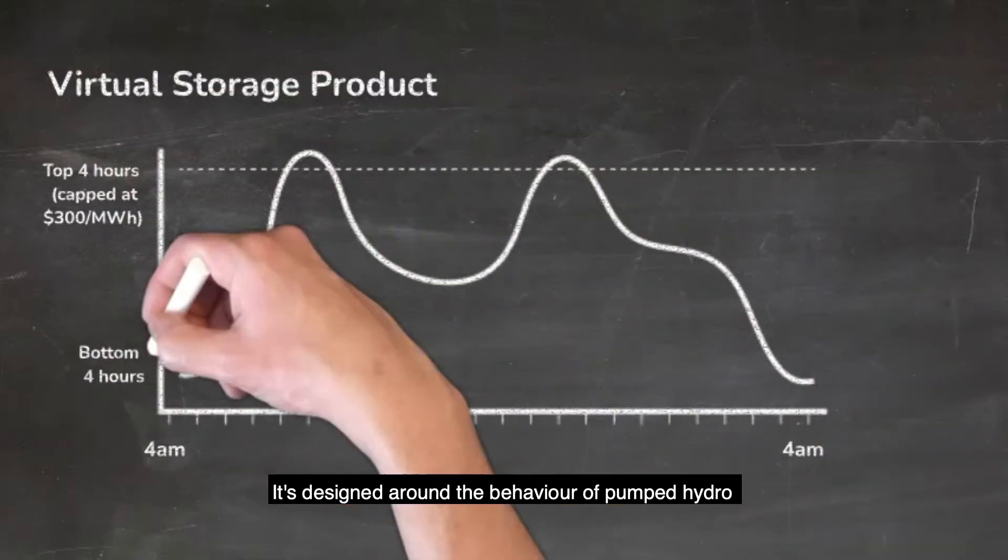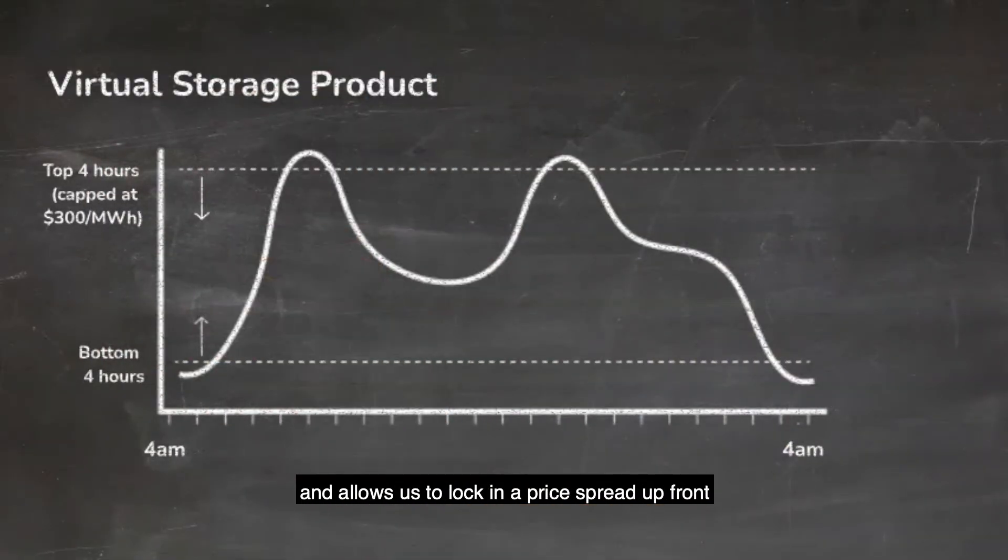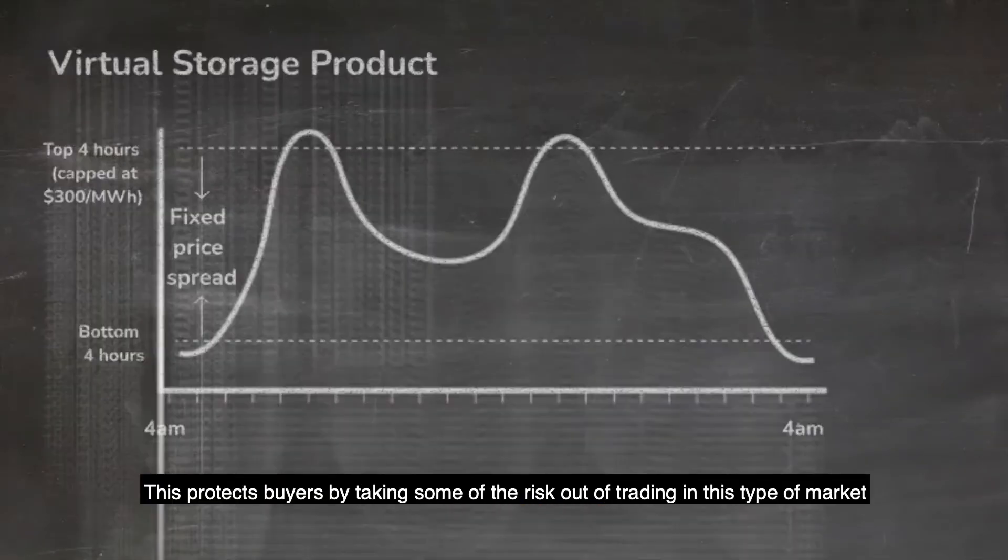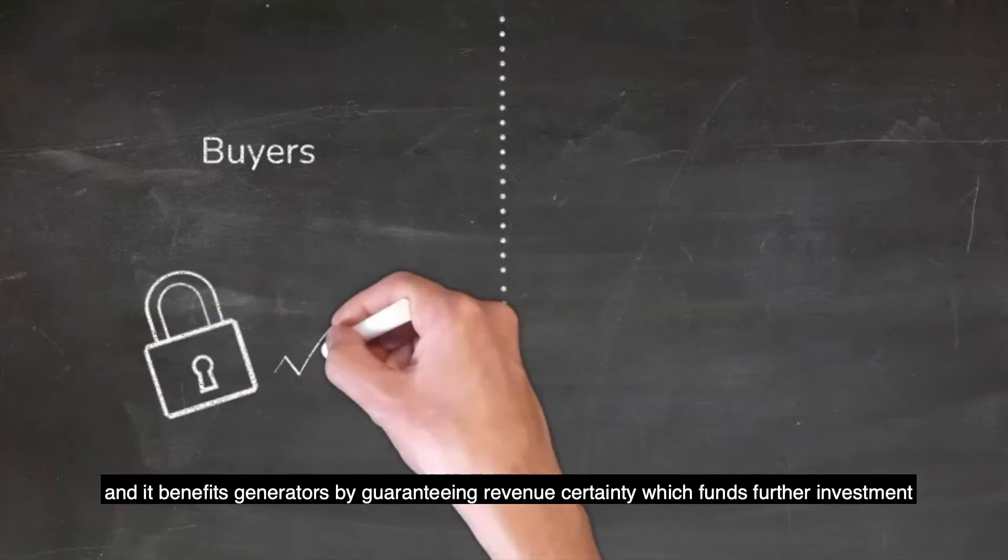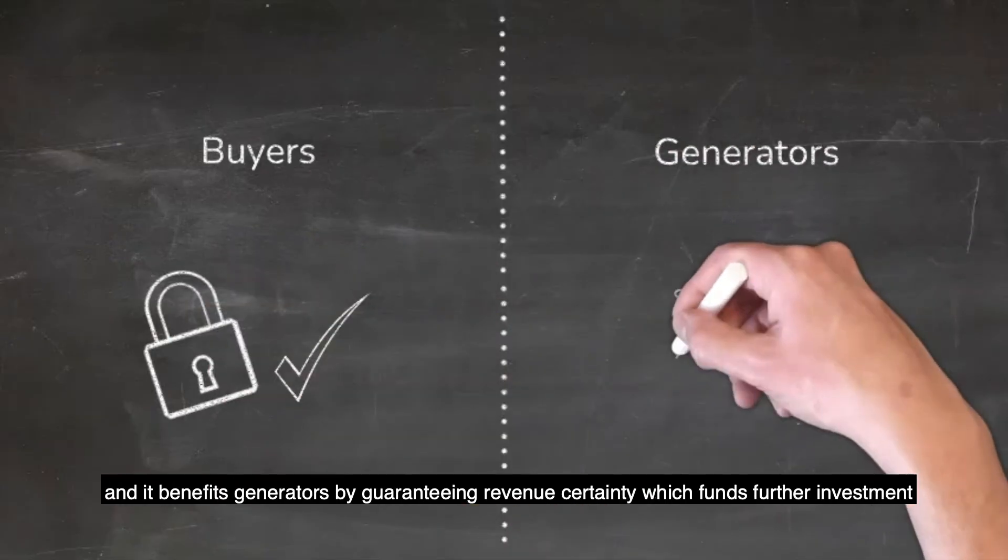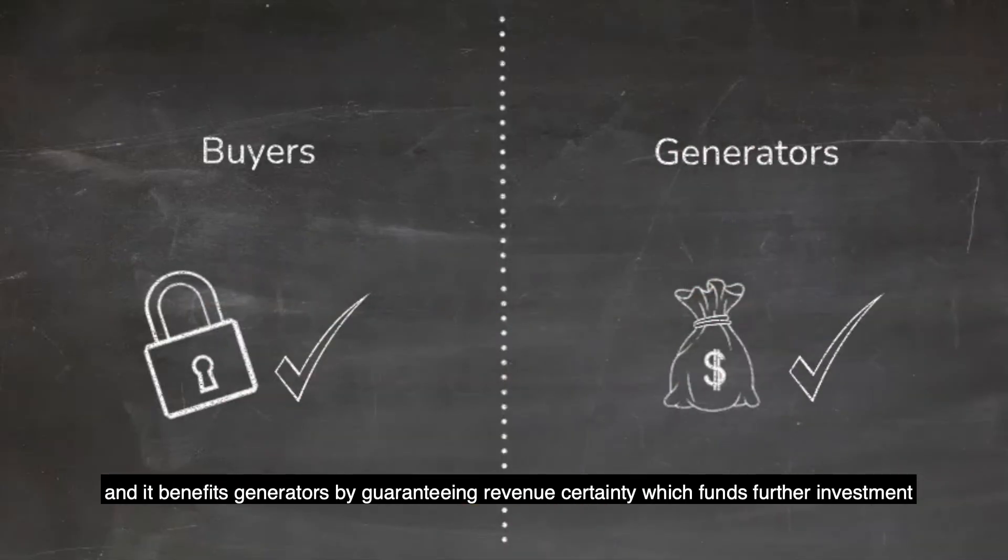So this is where the virtual storage product comes in. It's designed around the behavior of pumped hydro and allows us to lock in a price spread upfront. This protects buyers by taking some of the risk out of trading in this type of market. And it benefits generators by guaranteeing revenue certainty, which funds further investment.